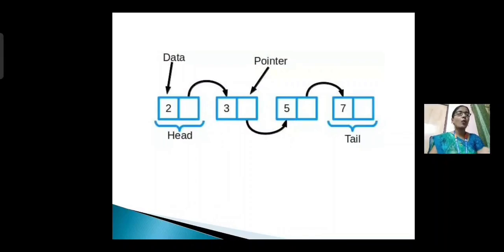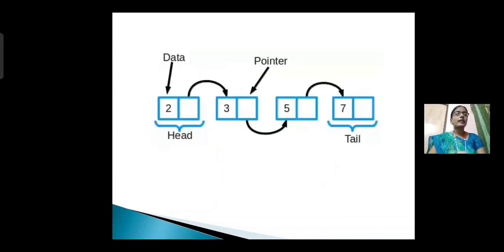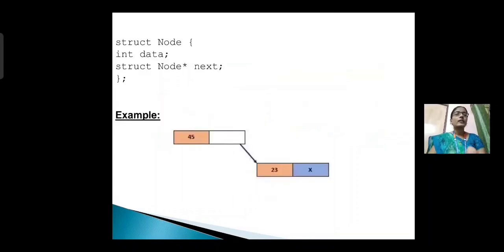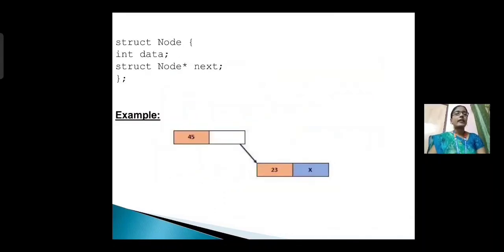Pointer is used to point to the next node address. In the struct example: struct node contains int data and struct node pointer to next. In the example diagram, 45 is the data and the reference part points to the next data part, which is 23. 23 is the next node data.